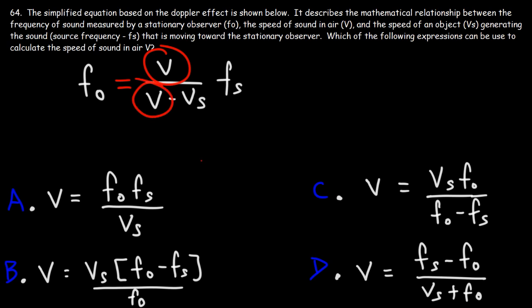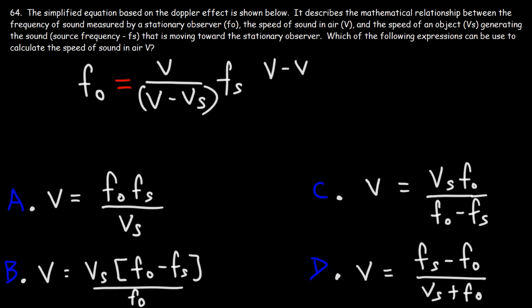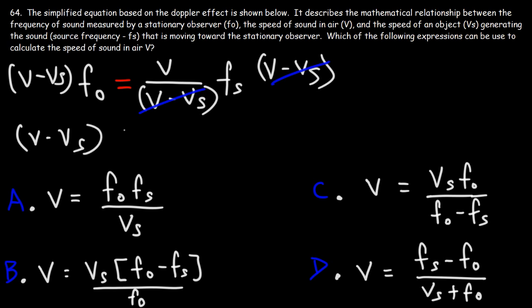Since we have two V's, at some point we need to factor out V, but we can't do that in its current form, so we'll need to rearrange the equation. The first thing we need to do is multiply both sides by V minus Vs — on the right side, these will cancel. What we have left is (V minus Vs) times Fo, equal to V times Fs.